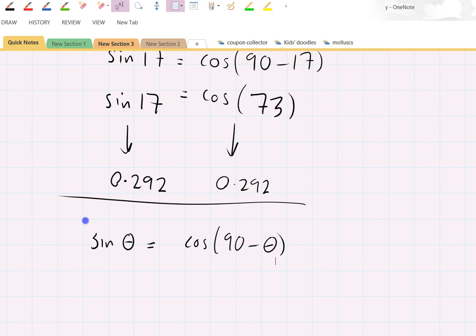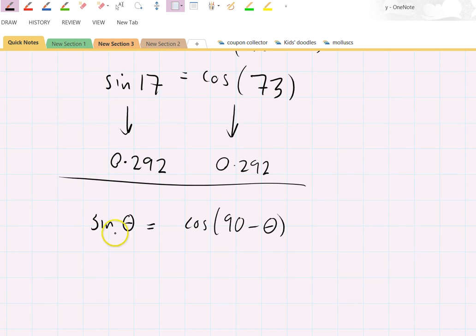We tried it with 17 but it works for anything. Let's just try it with 45 degrees. So sine of 45 degrees equals the cosine of 90 minus 45. And of course 90 minus 45 is the cosine of 45.